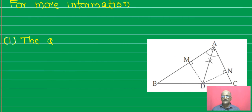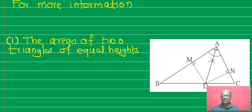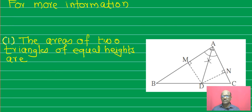The triangle is ABD. The angle bisector from A meets at point D. Every point on the angle bisector is equidistant from both sides. That is, the distance MB equals distance MD, meaning the areas of the two triangles of equal heights are proportional to their bases.